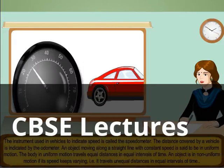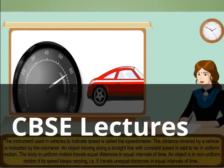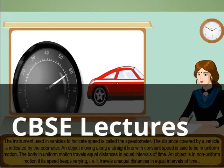The instrument used in vehicles to indicate speed is called the speedometer. The distance covered by a vehicle is indicated by the speedometer.